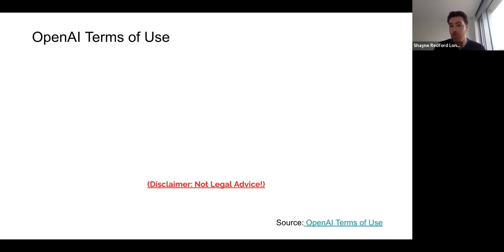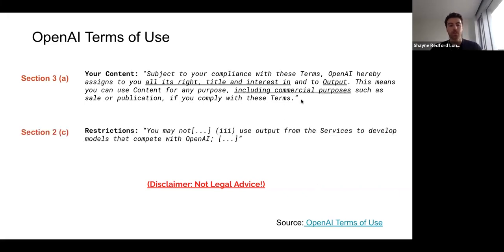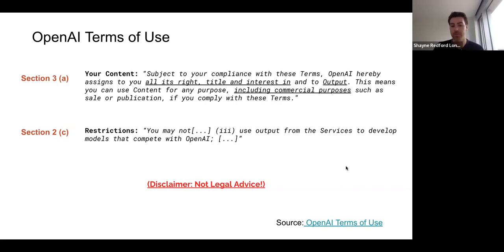Although I'm not a lawyer, there are some implications of this. Looking at the OpenAI terms of use, Section 3A says that users are given all rights, title, and interest in the output of the model, including for commercial purposes, as long as they comply with the terms of use. However, there's one particular restriction in Section 2C that's relevant: you may not use output from the services to develop models that compete with OpenAI. This seems to rule out any sort of commercial application and potentially other applications.